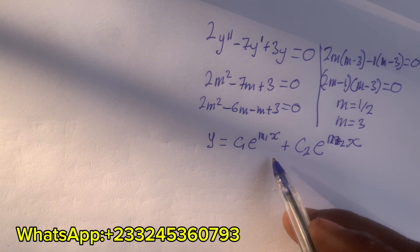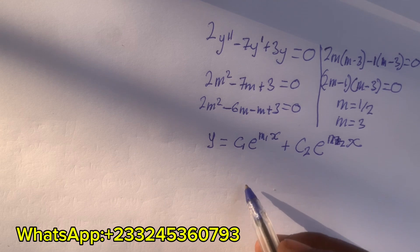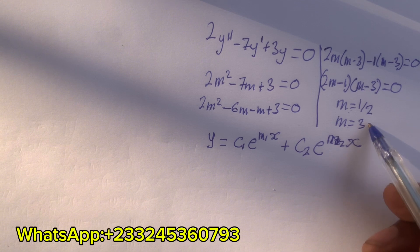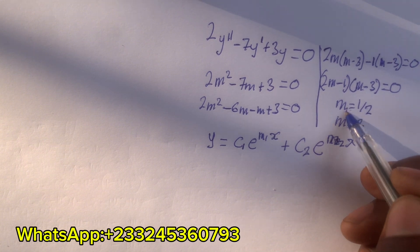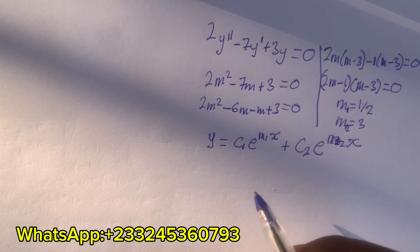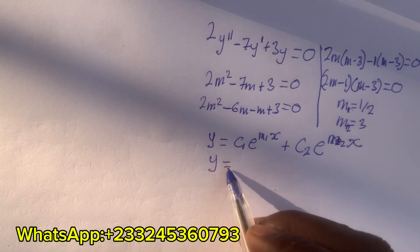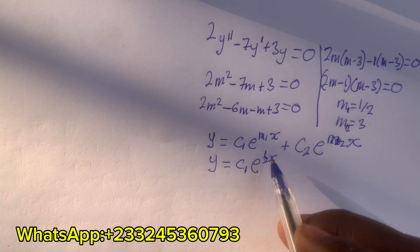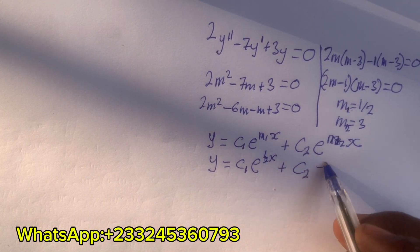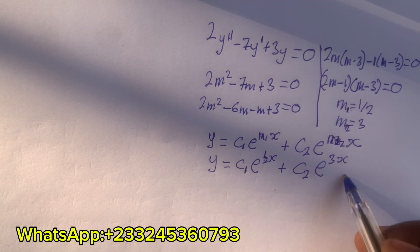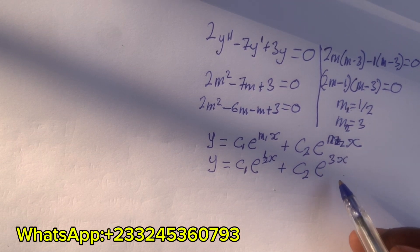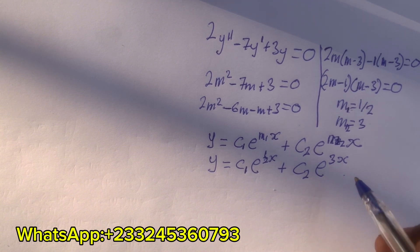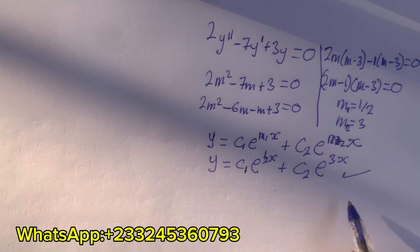This is simply the general solution for linear second-order differential equations with constant coefficients whose characteristic equations have distinct or unrepeated real roots. Here, m₁ can be 1/2 or we can take m₂ to be 1/2 or m₁ to be 3 or m₂ to be 3. So if we take m₁ to be 1/2 and m₂ to be 3, then we have the general equation as y = c₁e^(x/2) + c₂e^(3x) as the general solution. Here, we don't have any initial conditions or boundary value problem, so this is the general solution.